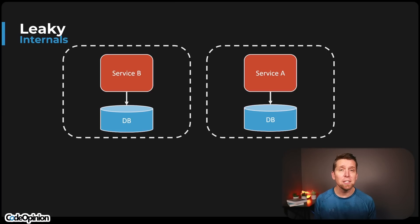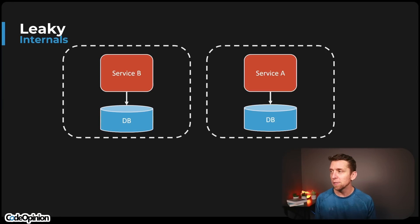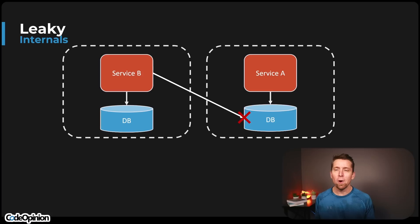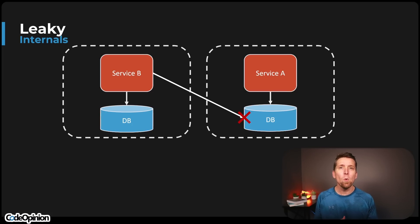The first common pattern is to use events as a form of data distribution. To illustrate this, let's say we have two different services. We've established in the industry that we don't want to leak internal implementation details about a service. That means Service B can't directly access Service A's database and understand its structure, how it stores its data, and all those internals. Rather, we'd have some API that Service A exposes — we don't want to access data directly from another service.